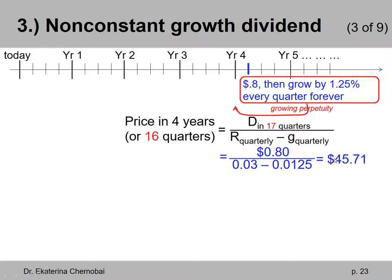Is this the answer to our problem? Is this the price today? No. This is how much you would pay in four years, because that's what the formula calculates for us. It's the present value of all dividends, but not today, which is where we want to be eventually, but in four years.